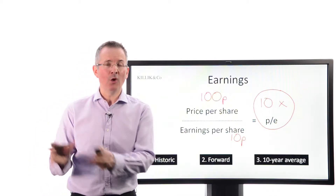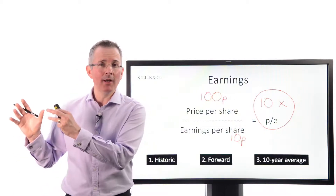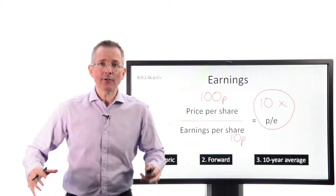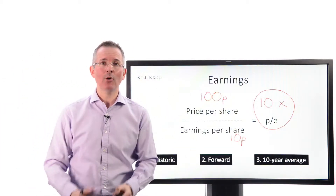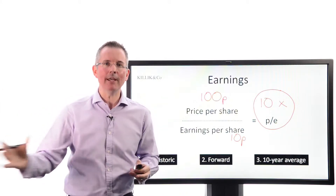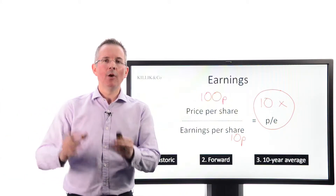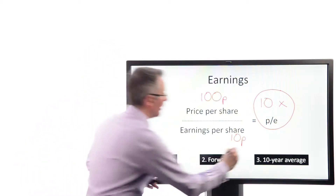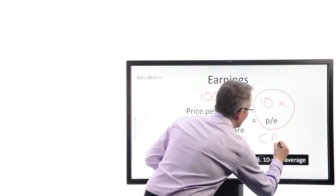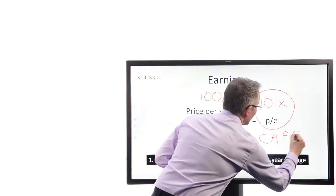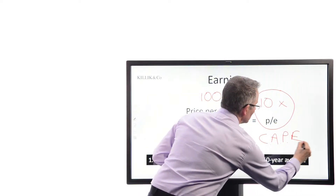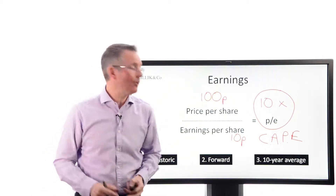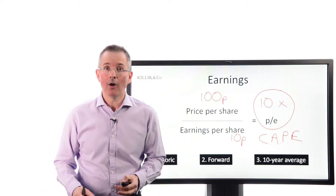Then there are people who say those two approaches only look at one year's data, whether historic or future. So actually, to take into account an entire business cycle, you need to average 10 years' worth of earnings to come up with an average figure. Plug that in and you get something sometimes referred to as the CAPE — the Cyclically Adjusted PE ratio — or the Shiller PE, after the professor who came up with it.